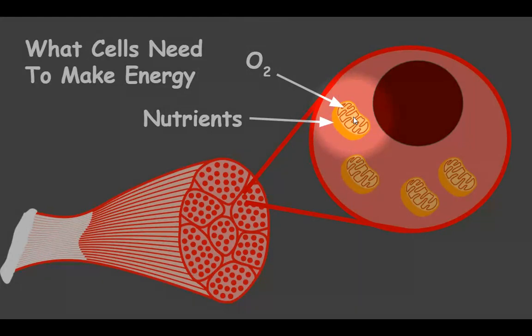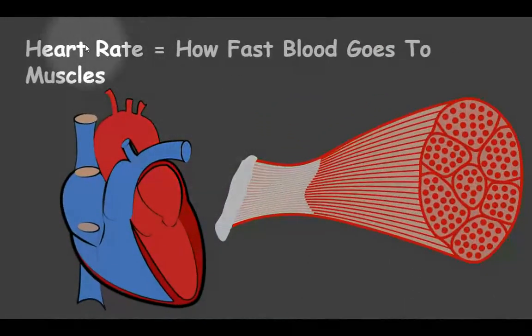Then what's going to happen is how does the oxygen and the nutrients get to the muscle cells? The faster the muscle cell works, what's going to happen is the faster the heart rate.